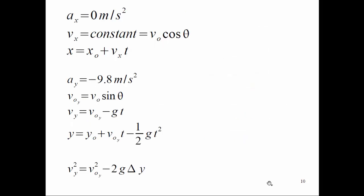Here are the equations we're going to use. The initial X velocity is V-naught cosine of theta, and the initial Y velocity is V-naught sine of theta. These are in degrees, so make sure your calculator is in degrees for projectile motion.